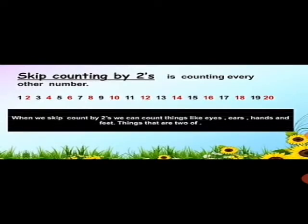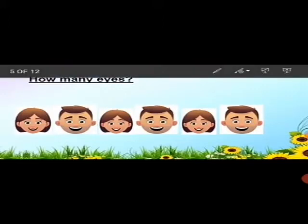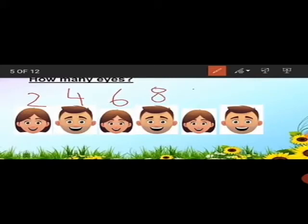When we skip count by twos, we can count things like eyes, ears, hands, and feet — things that come in pairs. Here you can see the faces of different boys and girls. Tell me how many eyes do they have altogether. We start with 2, then 4, 6, 8, 10, 12 — so they have twelve eyes altogether.